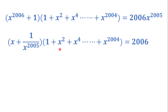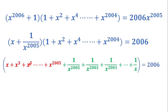In the next step, we want to multiply this expression by (x + 1/x^2005). If we multiply these terms by x we get x + x^3 + x^5 + ... + x^2005, and multiplying by 1/x^2005 we get 1/x^2005 + 1/x^2003 + 1/x^2001 + ... + 1/x.